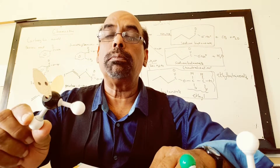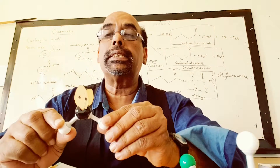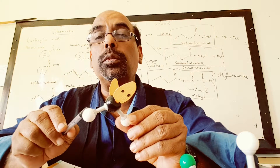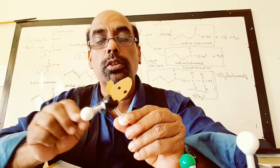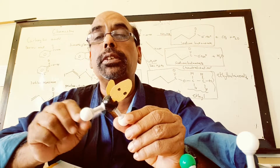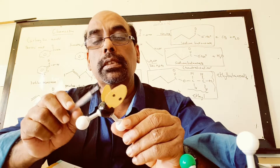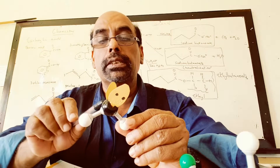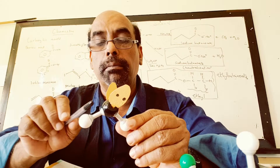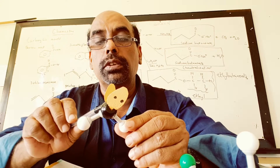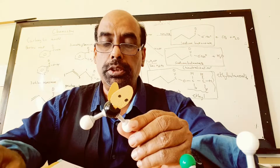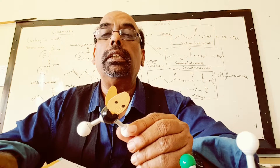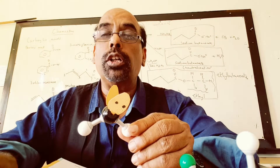In water there are no double bonds, only single bonds. This is the oxygen atom, and these are the two hydrogen atoms. There are two lone pairs of electrons. These are sigma bonds between the oxygen and hydrogen atoms. We do not have pi bonds in a water molecule.